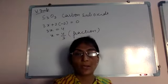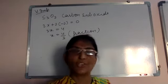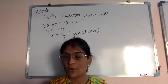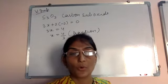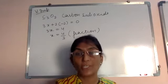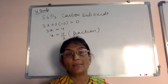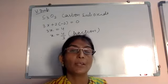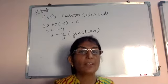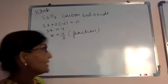Why is this oxidation number a fraction — that is, 4 by 3? Because it is the average oxidation number of the 3 carbon atoms in the molecular formula of carbon sub oxide. There are 3 carbon atoms, so the oxidation state 4/3 is the average. If we want to calculate for individual carbon atoms, we need to know the structure.